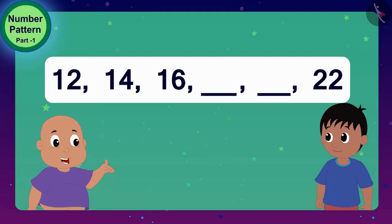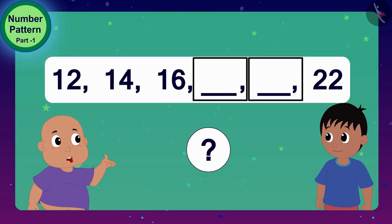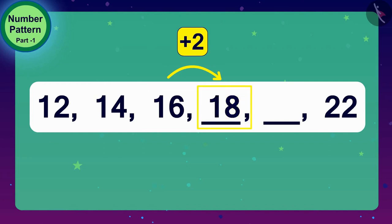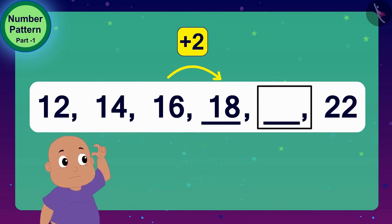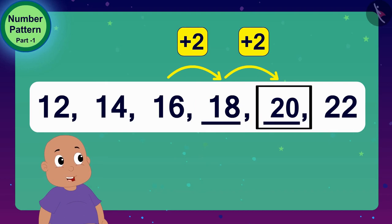So what do we have to do to get the next number in this number pattern? We have to add 2 to 16. Done. 2 added to 16 is 18. Bablu, now can you tell what will be the next number? Add 2 to 18 and you get 20.